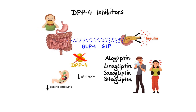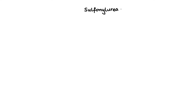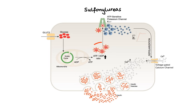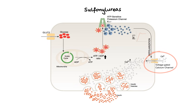Now let's move on to sulfonylureas. To understand how they work, we first need to review glucose-dependent insulin secretion from pancreatic beta cells. Glucose enters the beta cell through glucose transporter 2 (GLUT2) and gets metabolized to create ATP. Rising ATP levels lead to inhibition of ATP-sensitive potassium channels, blocking potassium outflow. This leads to depolarization of the cell membrane, triggering activation of voltage-gated calcium channels, and influx of calcium. Finally, increased calcium levels mediate fusion of insulin-containing vesicles with the membrane, leading to insulin release.